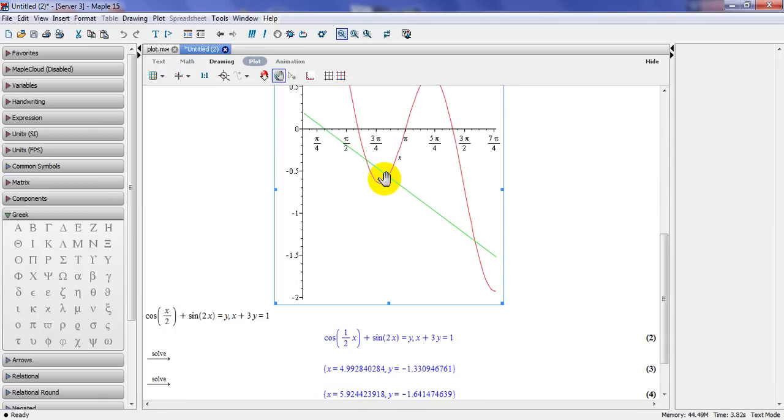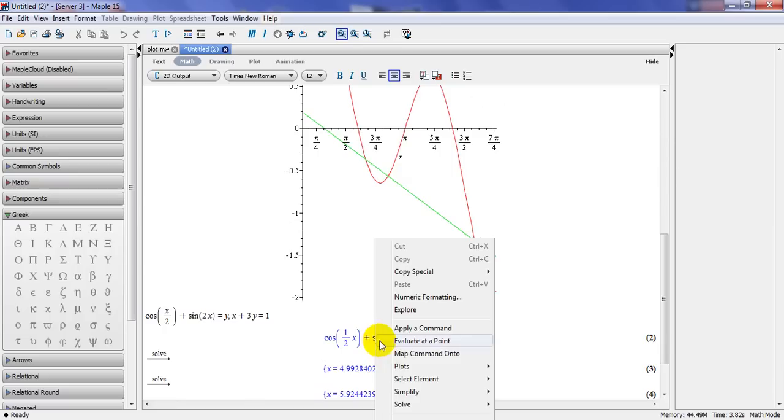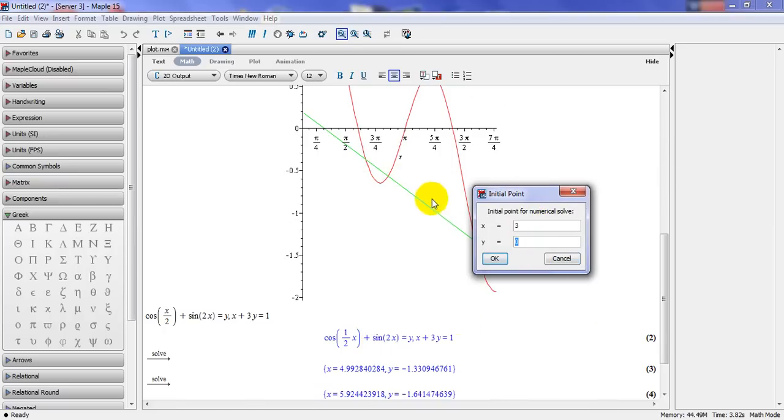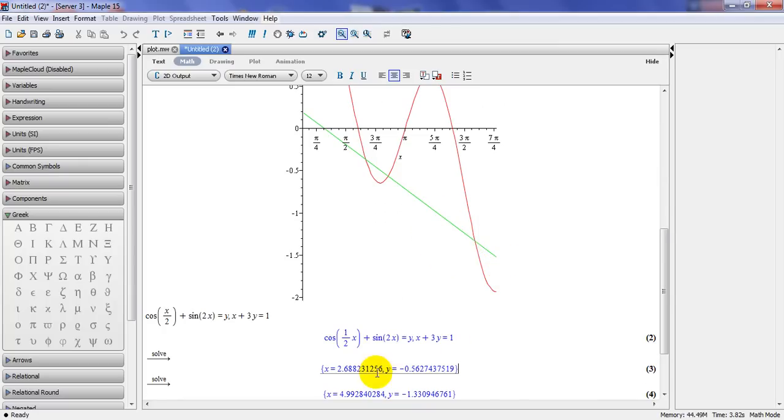I want to find the other one, which is here. So I have to go and do it again. And you solve, solve numerically. And this value is about 3 and here is minus 0.5. And as you can see, the next one is given. So it helps you to find the solution of more complex equations.